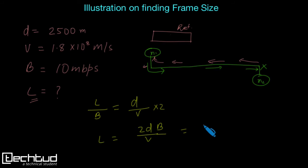So let's put the values. So it would be 2 into D is 2500 meters, bandwidth is 10 into 10 to the power 6, and then velocity is 1.8 into 10 to the power 8.